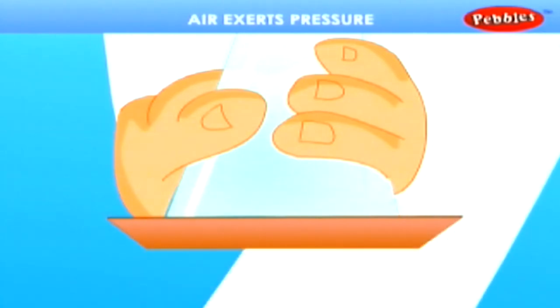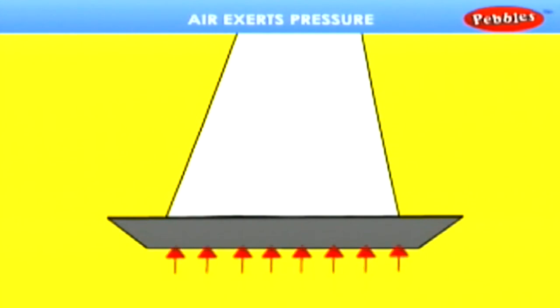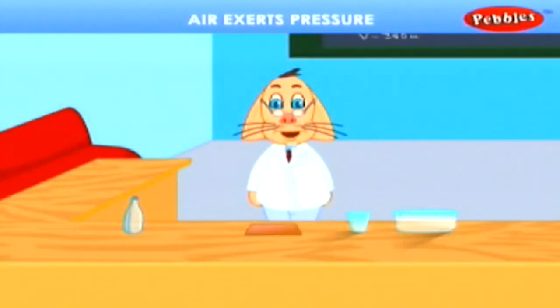Now, turn the glass over and remove your hand. You will be surprised that the water and the paper do not fall down. It is because air from below is exerting pressure and this pressure is supporting the paper in position.